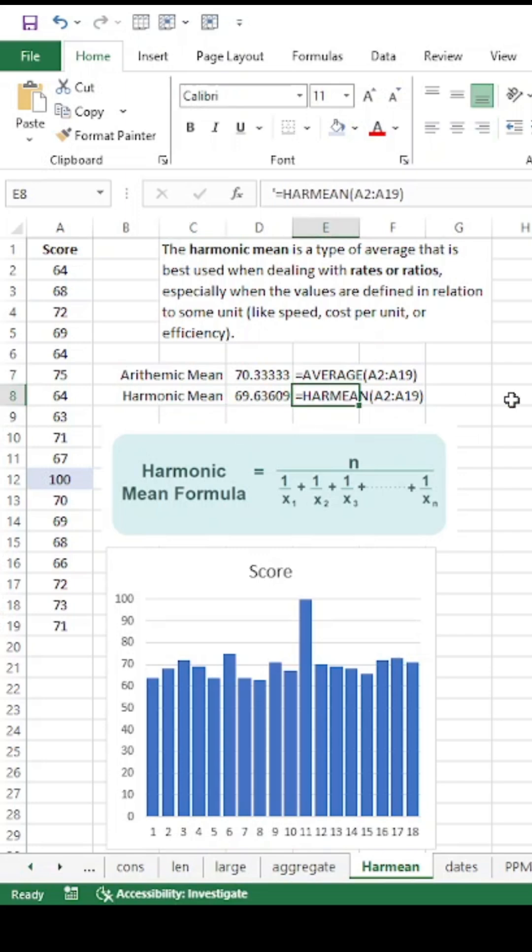Harmonic mean, known in Excel as HAR mean, that is a formula right there. So it's similar. Instead of average, you just put HAR mean.